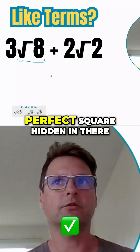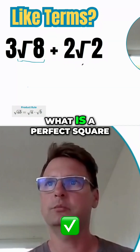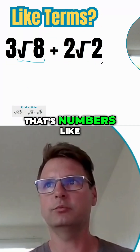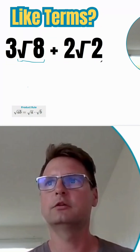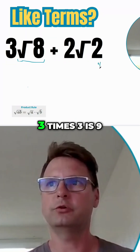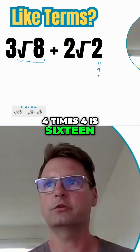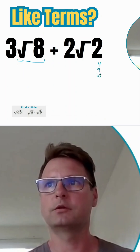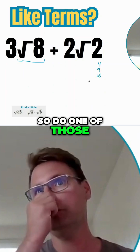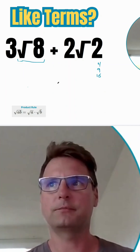Can you find a perfect square hidden in there? What is a perfect square? Those are numbers like four — two times two is four, three times three is nine, four times four is 16, and so on. So do one of those divide evenly into eight?